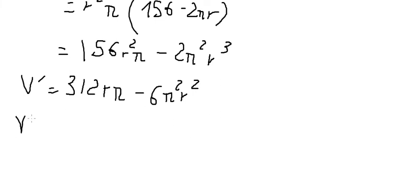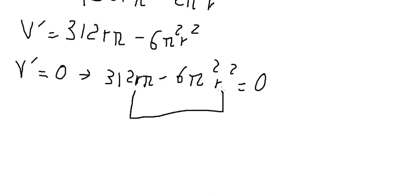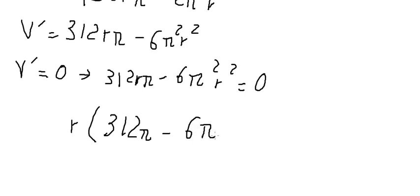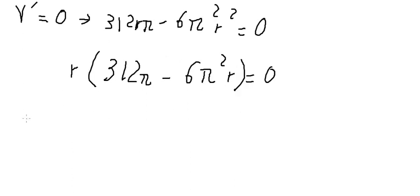Now we need to do this one because we want to find the critical point, so we need to put first derivative of the function equal to zero. So that means we have this one. We see that we have r and r, we can do factorization. So r equal to zero.